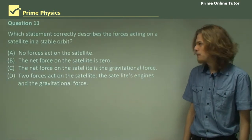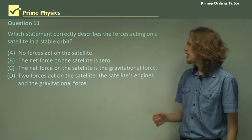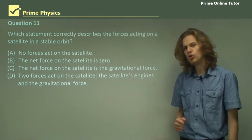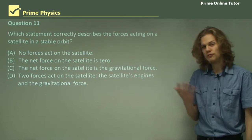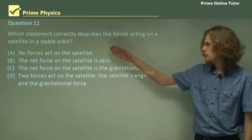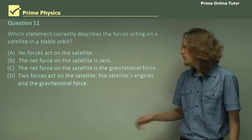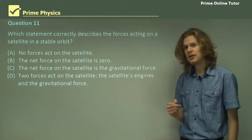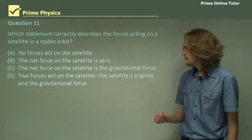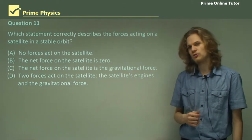Question 11. Which statement correctly describes the forces acting on a satellite in orbit? We have a few options. There is no forces acting on the satellite. The net force on the satellite is zero. The net force on the satellite is the gravitational force. Or two forces act on the satellite, the satellite's engines and the gravitational force.